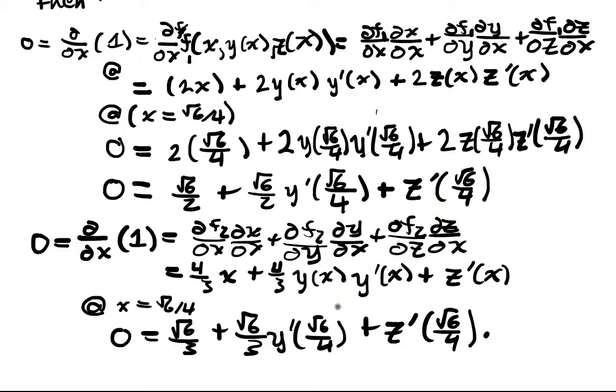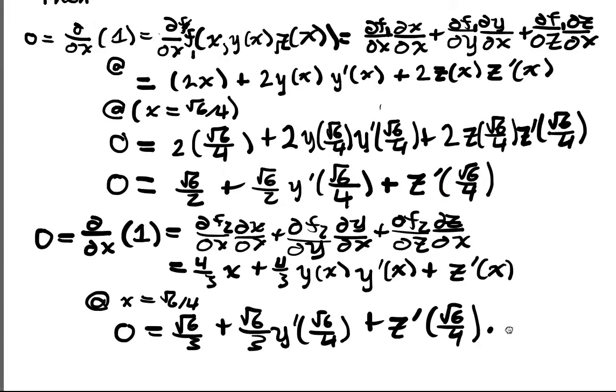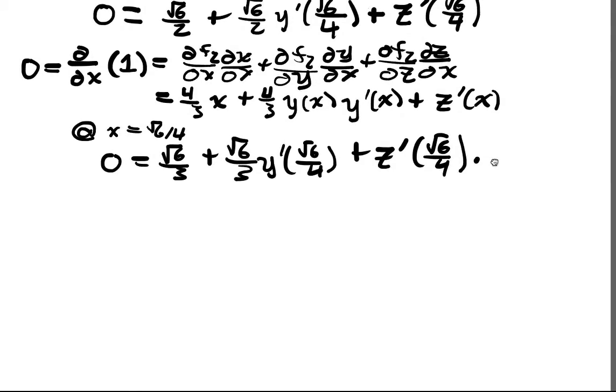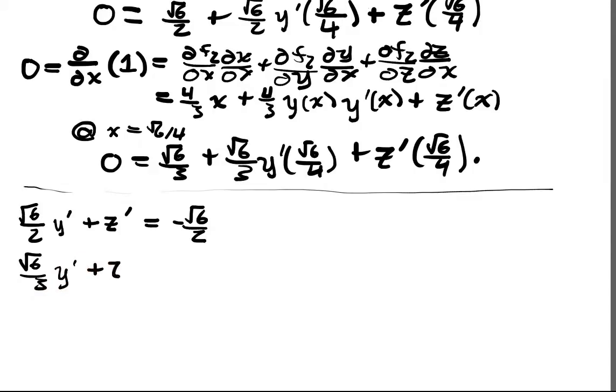What do I do when I have two unknowns and two equations? Well, I solve that system. So we have the linear system √6/2 y' + z' = -√6/2, and √6/3 y' + z' equals -√6/3, all at √6/4.